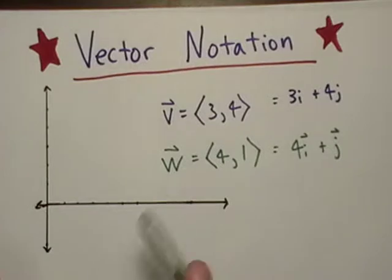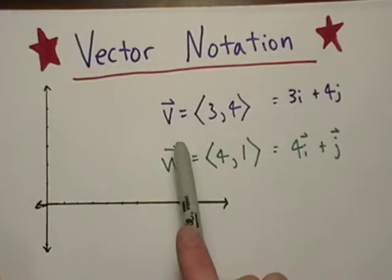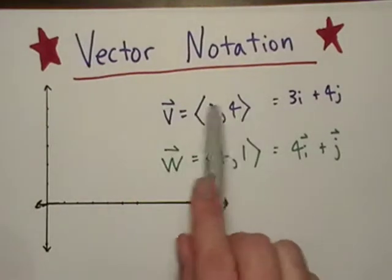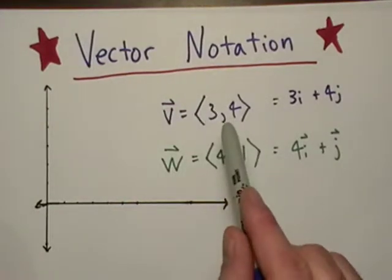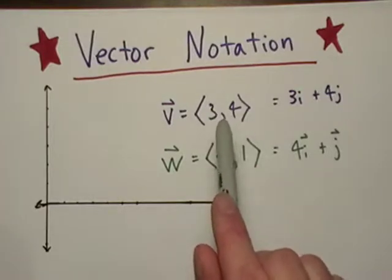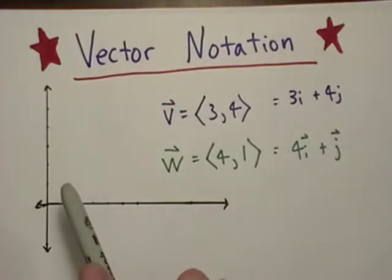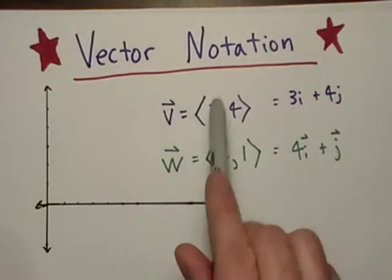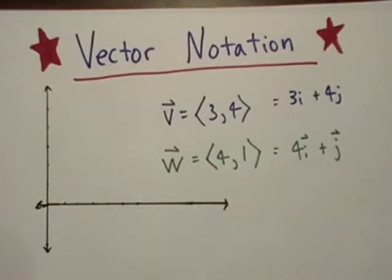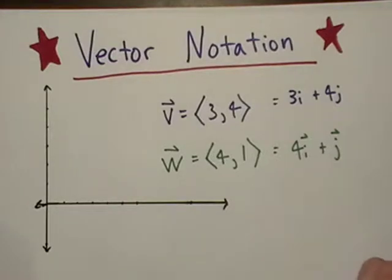First thing I want to show you is this notation here. Here's vector v, and it looks like a coordinate point. Essentially, this is where the vector will terminate. If we go up 4 and over 3, or over 3 and up 4, and draw our vector from the origin, we'll end up with this vector v.